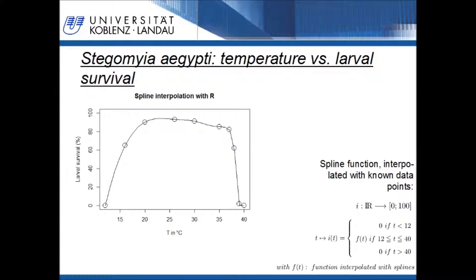In the next step, we want to find a function describing the given data and with which it is possible to predict the survival rate at temperatures not investigated in the trial. There are many interpolation methods available, like triangulation or splining. All interpolation methods have different advantages and disadvantages. For the given data, I've used the interpolation method called splining, a method implemented in the software package R and easily usable for the described data. The calculated spline function is valid for temperatures between 12 and 40 degrees.